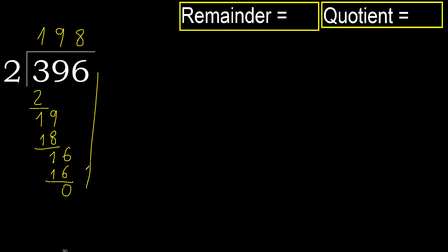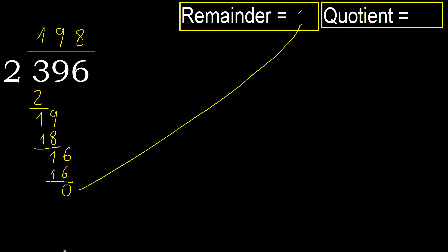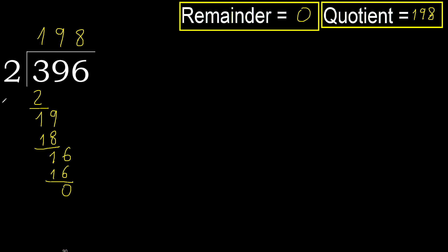That is not a number, therefore finish it. 396 divided by 2 is 198.